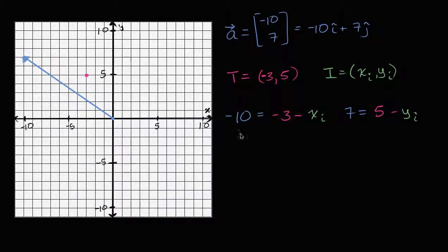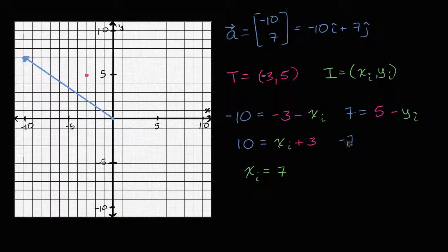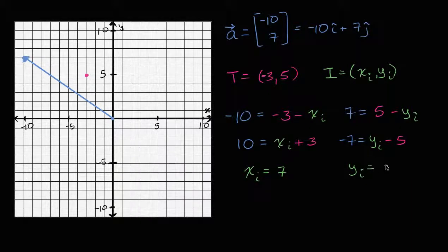From this, we can solve for x sub i and y sub i. If we multiply both sides of the x equation by negative one, we get 10 equals x sub i plus three. Subtracting three from both sides gives us x sub i equals seven. Then doing the same for the y equation, multiplying both sides by negative one gives negative seven equals y sub i minus five. Adding five to both sides, we get y sub i equals negative two.